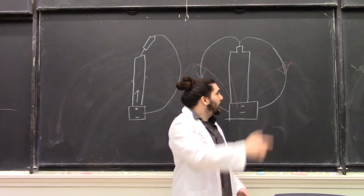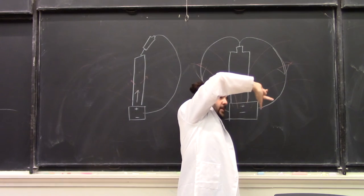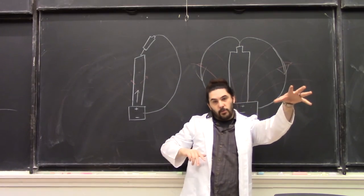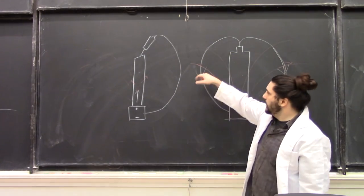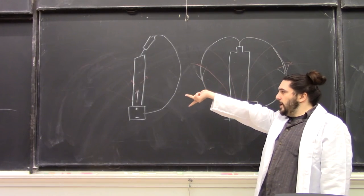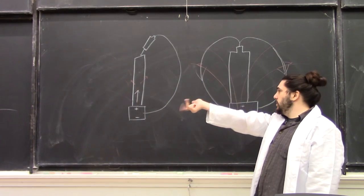So on this side we have current pointing down, magnetic field pointing out, so force on this wire is going to be out of the board. On this side, current is down, magnetic field is that way, so force is going to be into the board.